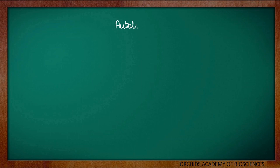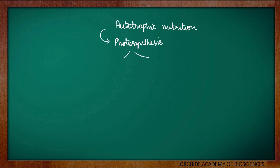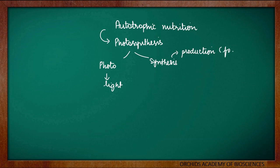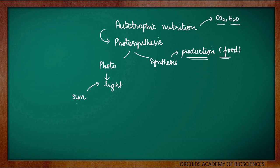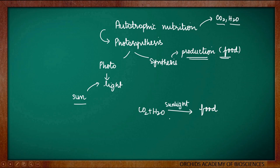Now, coming to autotrophic nutrition. How do the autotrophs prepare their own food? The autotrophs prepare their food by the process of photosynthesis. Let us split up this word: photo means light and synthesis means production. So, we can say there is production of food by using the light energy which comes from the sun. The autotrophs take in inorganic substances from the surroundings like carbon dioxide and water. We can define photosynthesis as a production of food by autotrophs utilizing carbon dioxide and water in the presence of sunlight and a pigment known as chlorophyll.